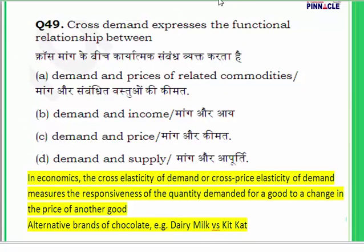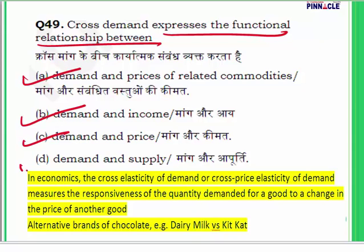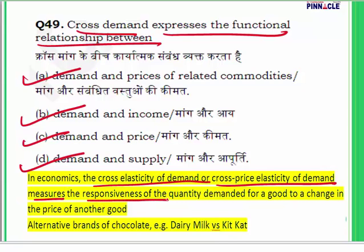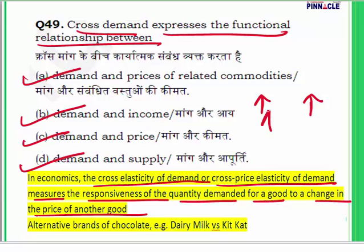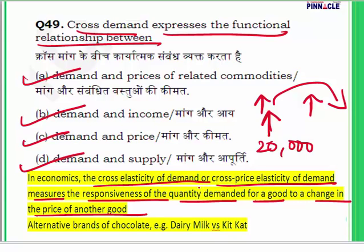Question 49: Cross demand expresses the functional relationship between — demand and prices of related commodities, demand and income, demand and price, or demand and supply? In economics, cross elasticity of demand measures the responsiveness of the quantity demanded for a good to a change in the price of another good. For example, if the price of a buffalo increases, it may impact the sale of a cow, as they are substitutes. Similarly, if the price of tea increases, what happens to the demand for coffee?